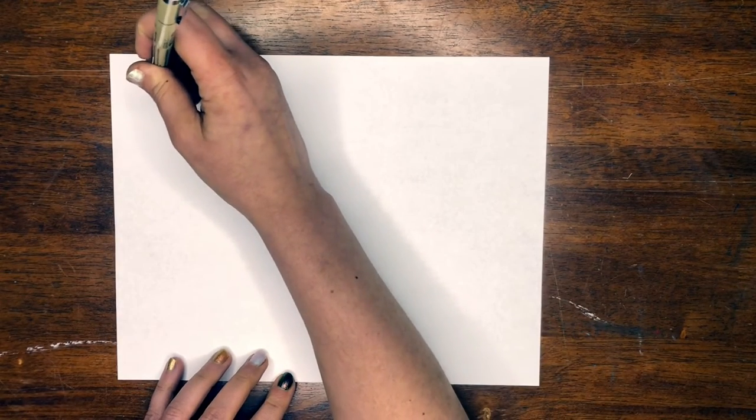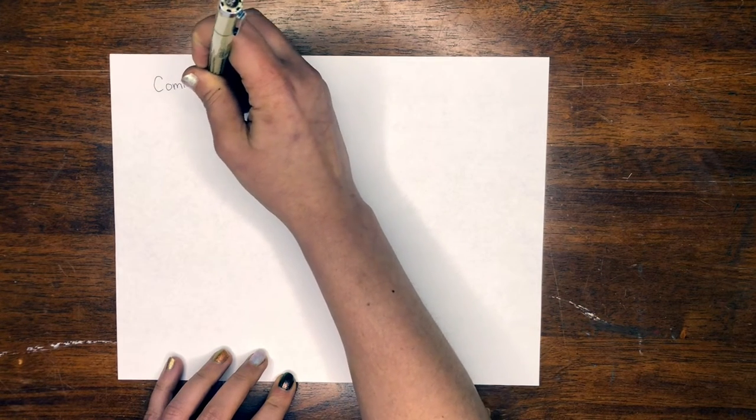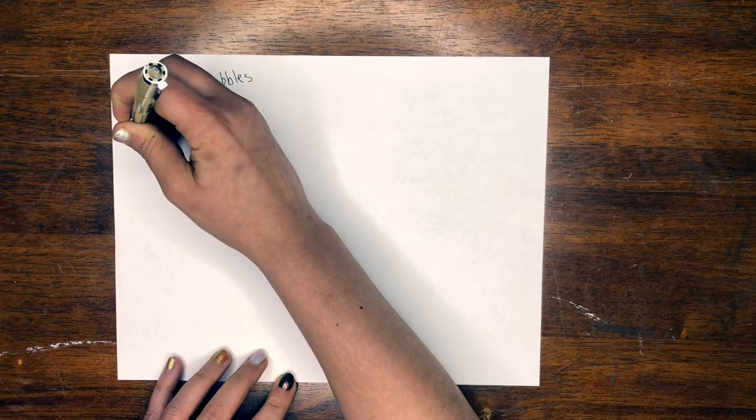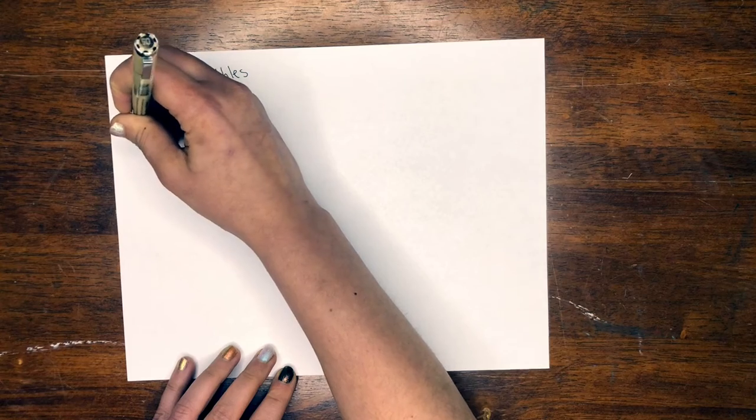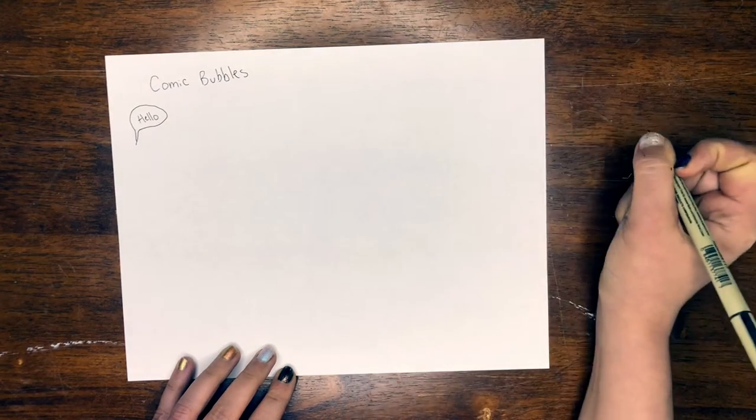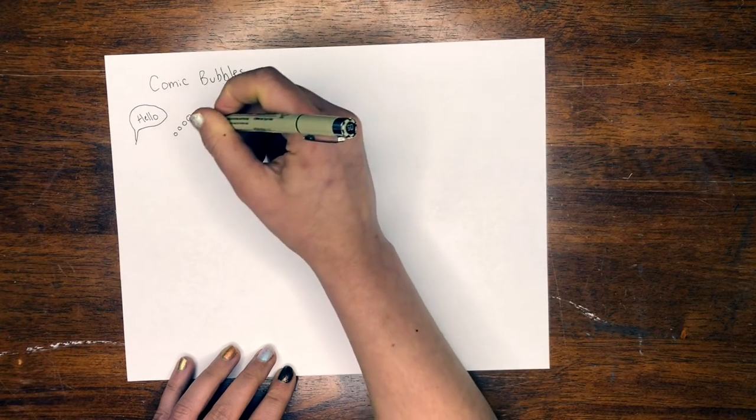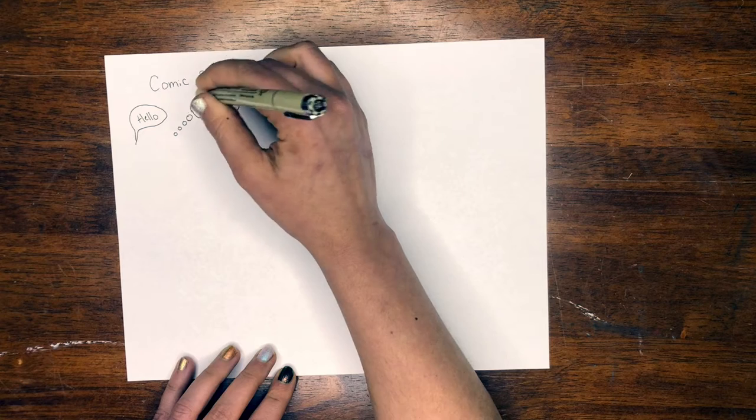The first trick to comic books is changing up your bubbles. So we have different types of bubbles when it comes to comic books. We have the one that everyone knows about and that's the word bubble. So that might be coming from somebody specific and I'll say hello. Then we can have a thought bubble. This one's also pretty common. The bubbles get bigger as they get to the thought and this is kind of like a cloud.